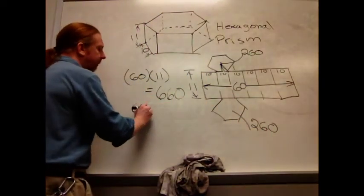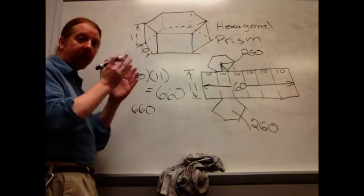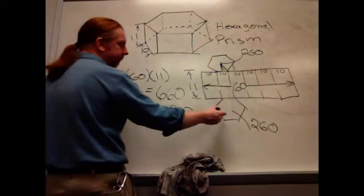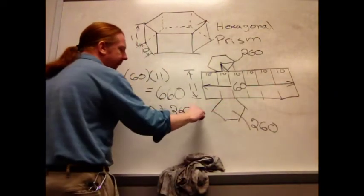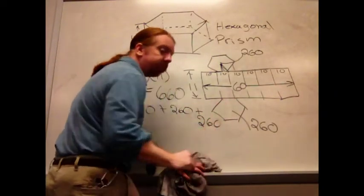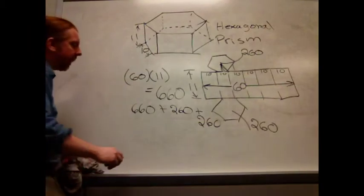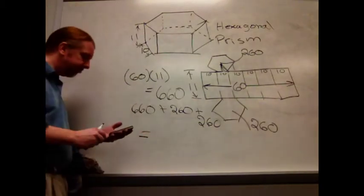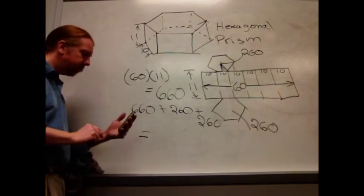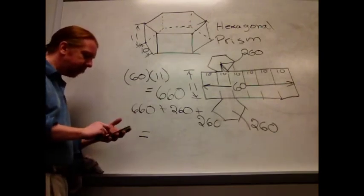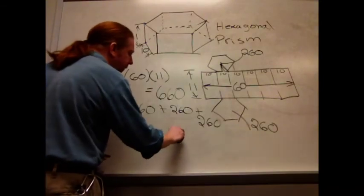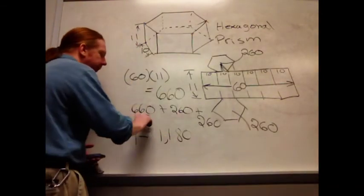So 660 for the lateral, which is the wraparound area, plus 260, which is the base. And I'll add another 260 as my top. Put them all together. Plus 260, plus 260. Final answer, 1180 square units.